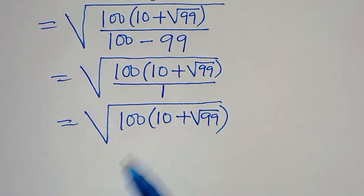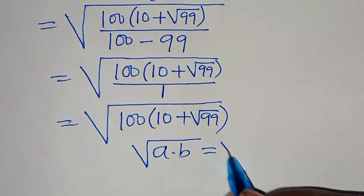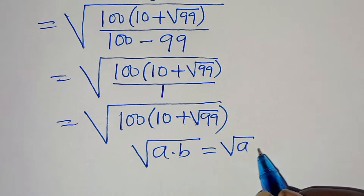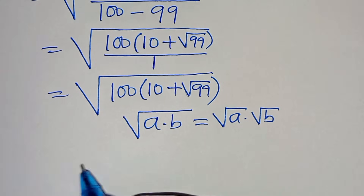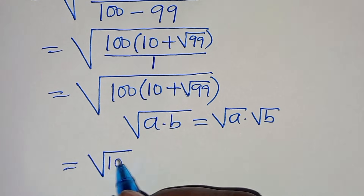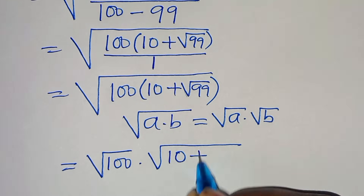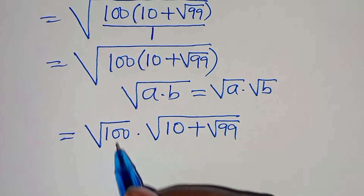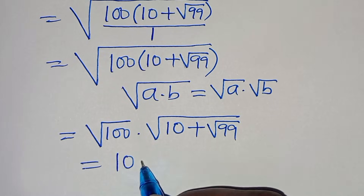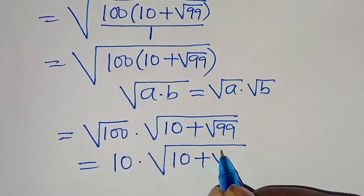Now we have square root of 100 times 10 plus square root of 99. This is in the form of square root of a times b, which we can express as square root of a multiplied by square root of b. Applying this property gives us square root of 100 multiplied by square root of 10 plus square root of 99.